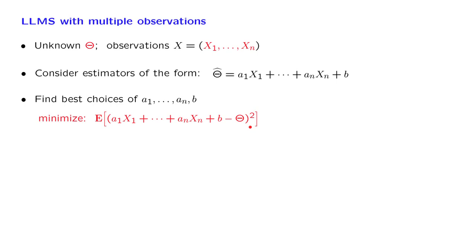One first comment is, similar to the case where we had a single measurement, is the following. If it turns out that the conditional expectation of theta, given all the data that we have, is linear in x, if it is of this form, then what happens?